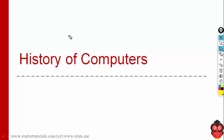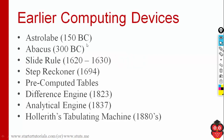In this session I am going to talk about the history of computers — how computers came into existence and what are the various computing devices which existed before computers were developed. You can see various things here: we have astrolabe, abacus, slide rule, step reckoner.